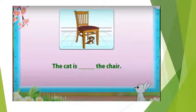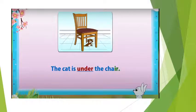The cat is dash the chair. Can you see the cat? Where it is? Tell me quickly. Yes, you are right. The cat is under the chair. So, under is a preposition.